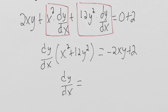So then dy/dx equals -2(xy - 1) divided by x² + 12y².